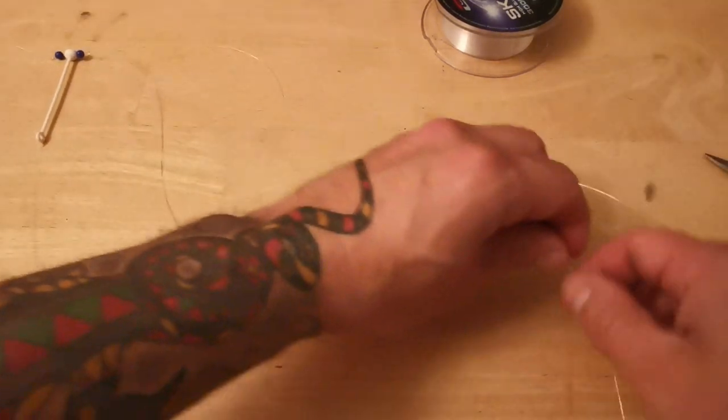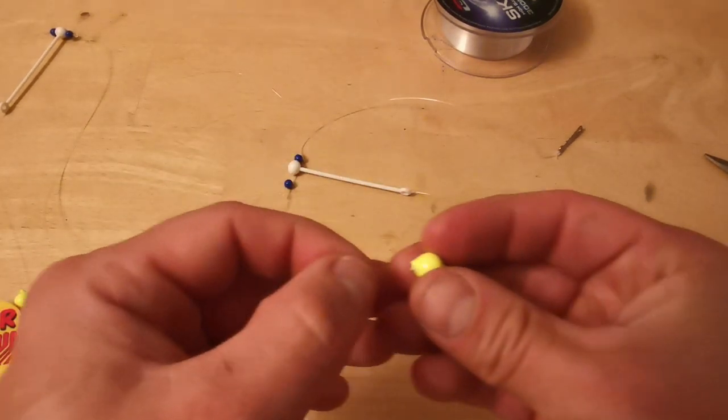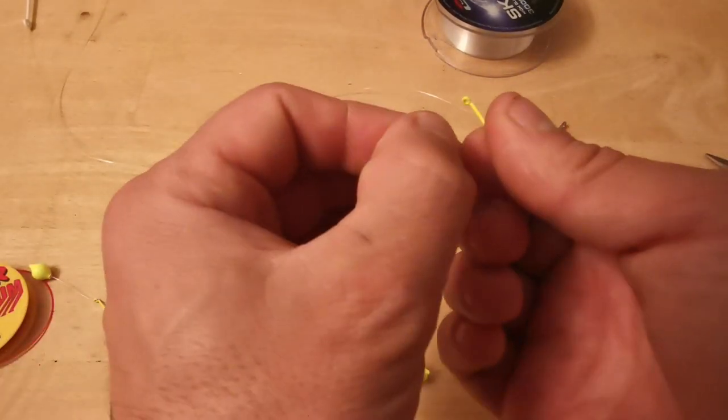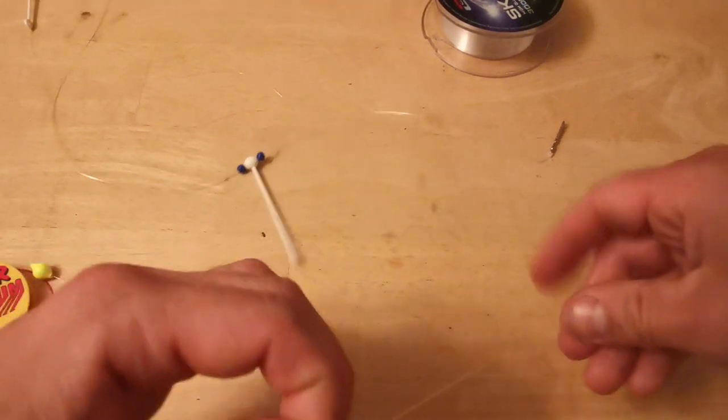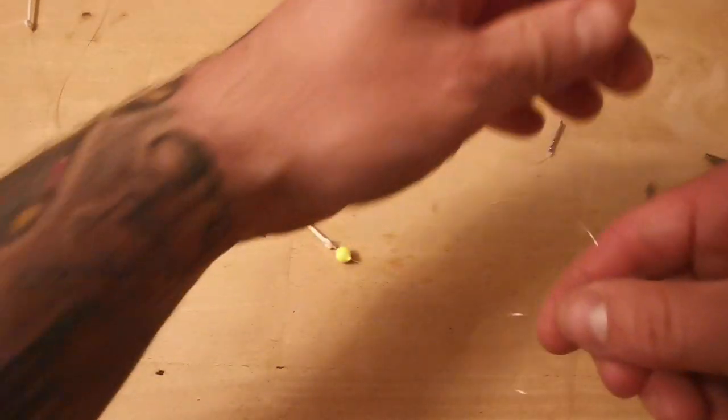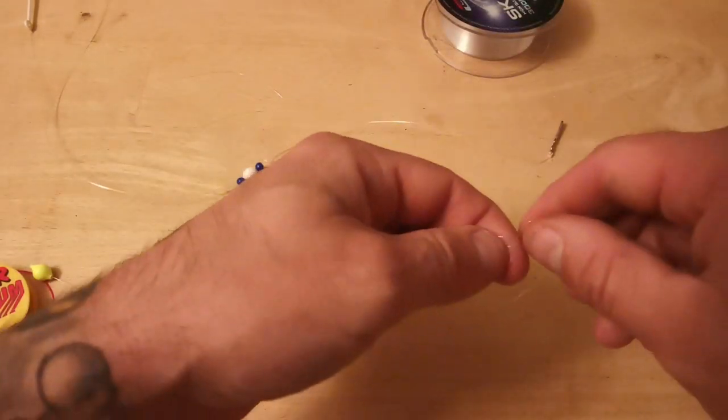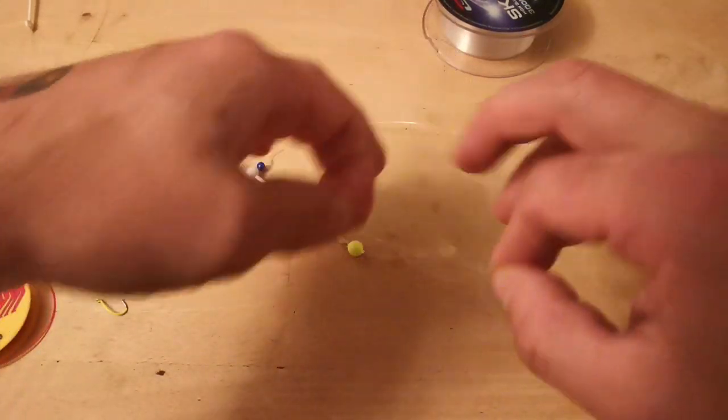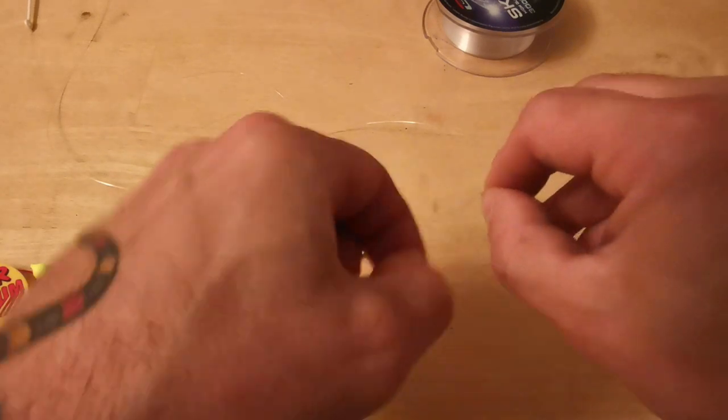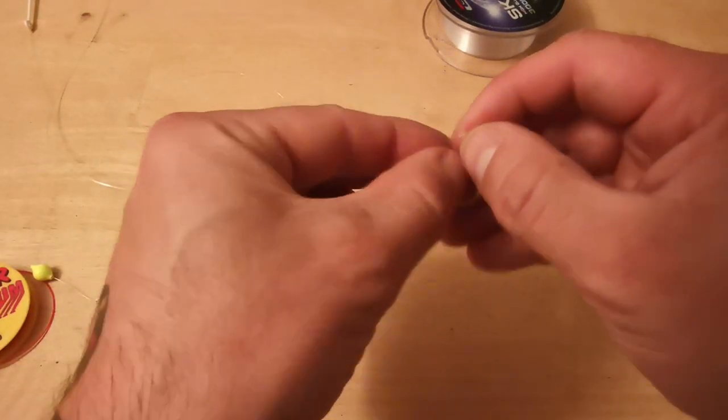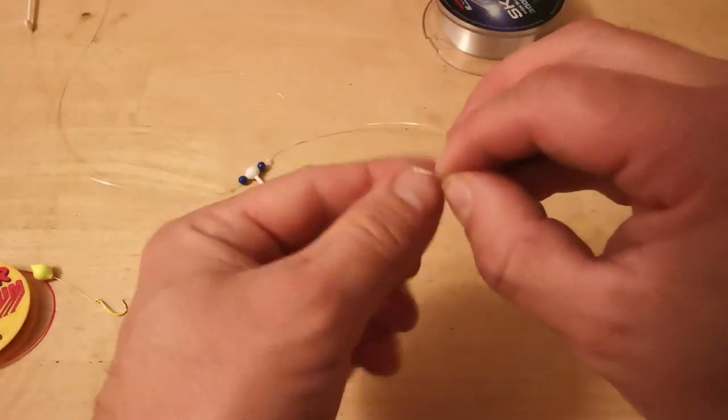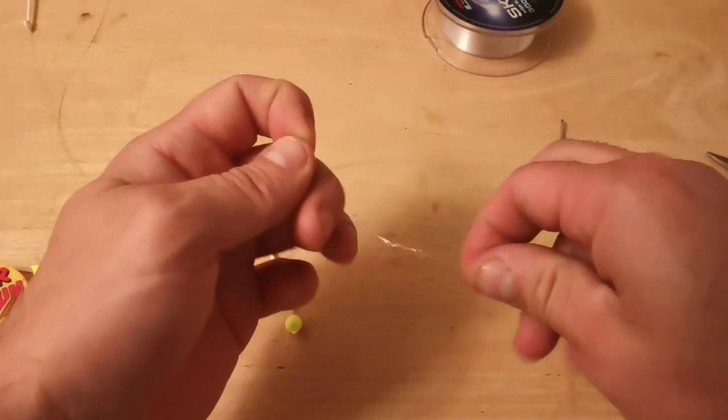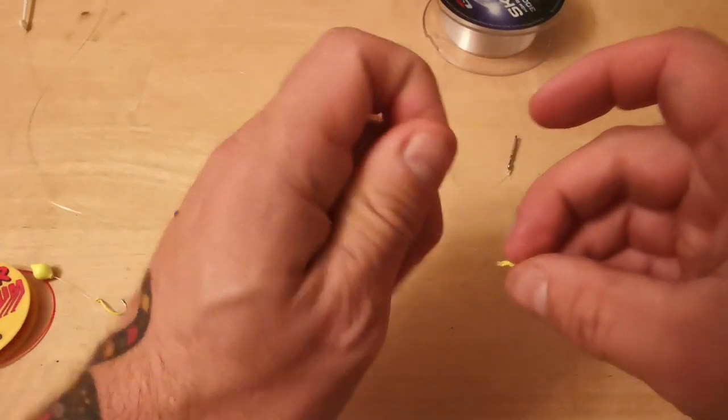Then we do the second one - slide on the floaty attractor, just gives a bit of movement on these little baits. And again, uni knot with the hook, about eight inches. If you've cut a bit too long a line you can always trim it off. Trim off that tag end.